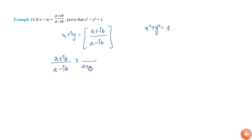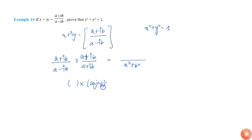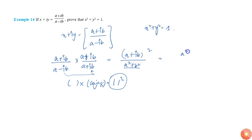I will multiply with a plus ib in both numerator and denominator. The denominator becomes a squared plus b squared, since any imaginary number multiplied by its conjugate equals the modulus squared. In the numerator we get a plus ib whole squared, which gives a squared plus i squared b squared plus 2iab by a squared plus b squared.